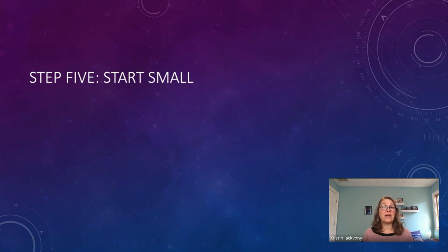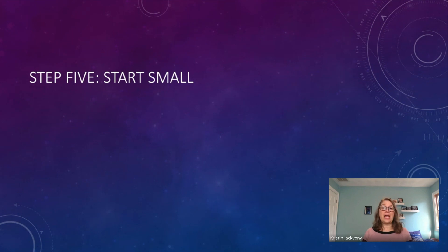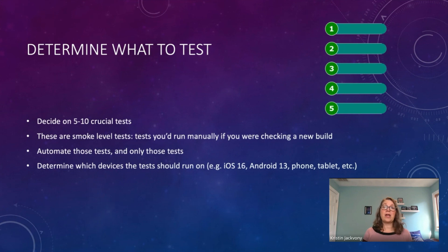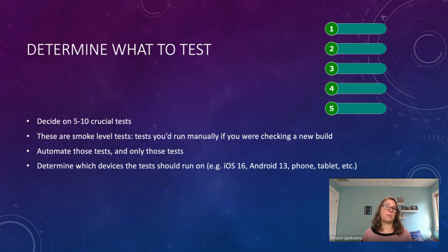Now we come to step five: start small. You might be tempted, now that you have a framework in place, to automate everything — but that's not usually a good idea. You might find that if you've automated 50 tests, 48 of them are flaky. So it's always best to start small. Determine five to ten crucial tests — smoke-level tests. Think about what your manager might ask you to run on a new build just to make sure it's okay, and automate those tests and only those tests to start.